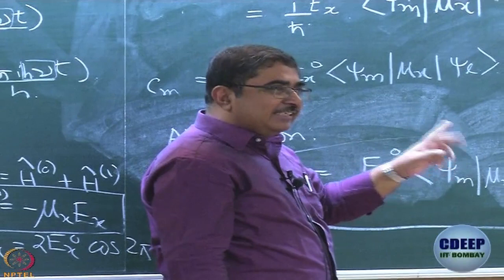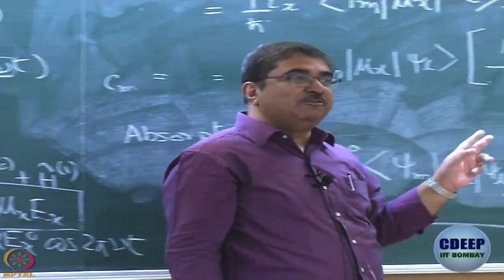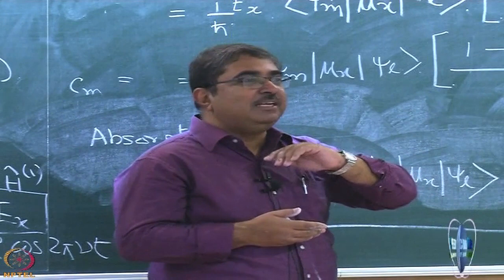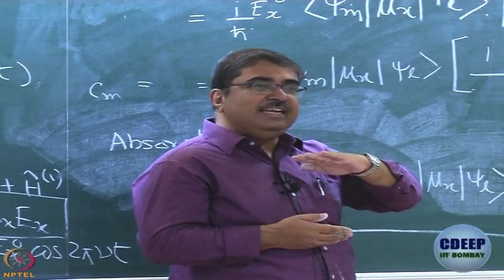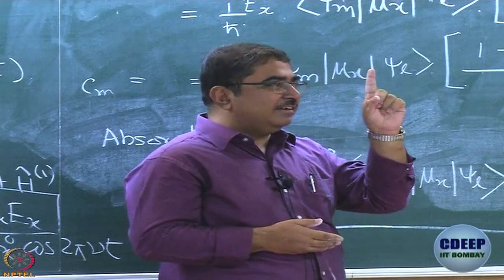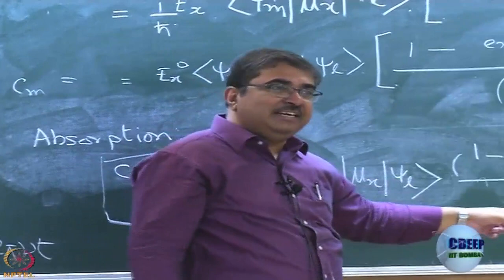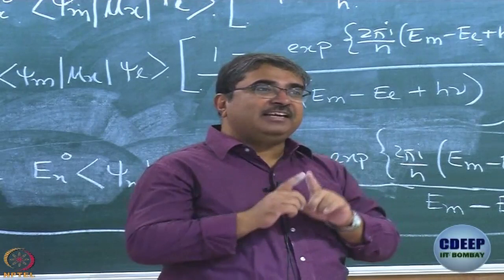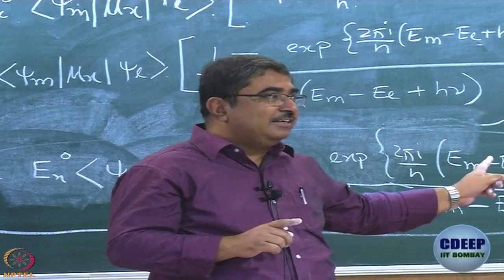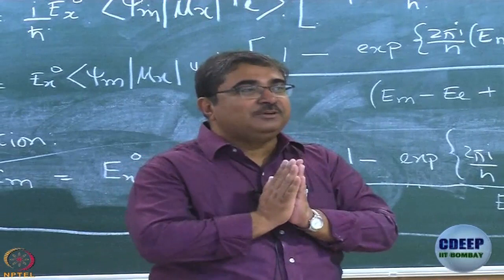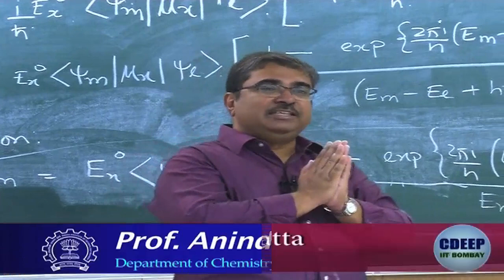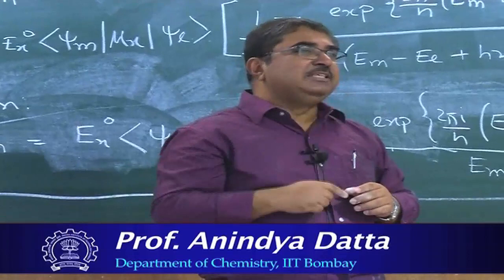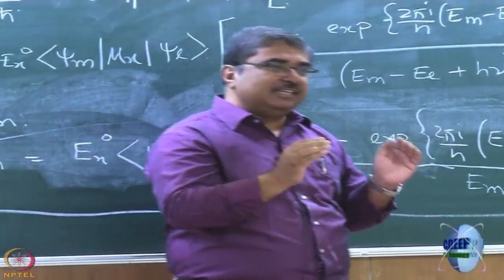We have been taking the Bohr resonance condition for granted, but now we have derived it from time-dependent perturbation theory. Next day we will work out |CM|² and see that even a two-level system with energies EL and EM can never have zero line width — a finite natural line width always exists, arising from the time part and related to the uncertainty principle. After that we will discuss Fermi's golden rule, Einstein's coefficients, and the relationship between absorption and emission coefficients.